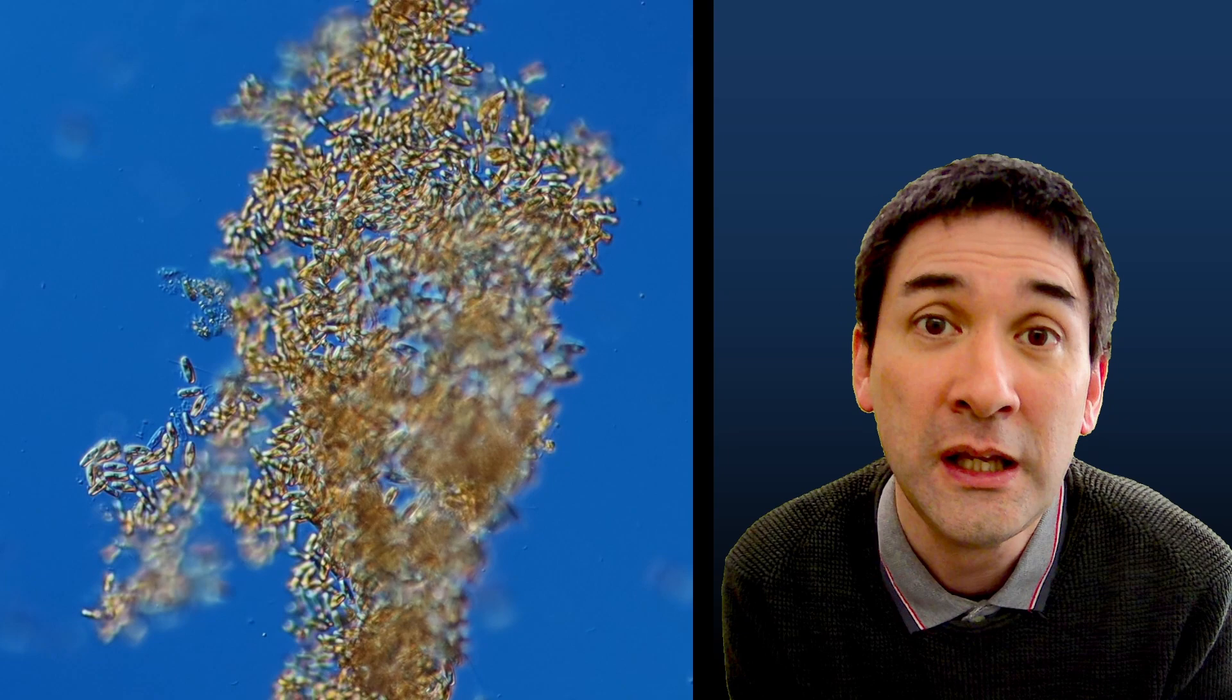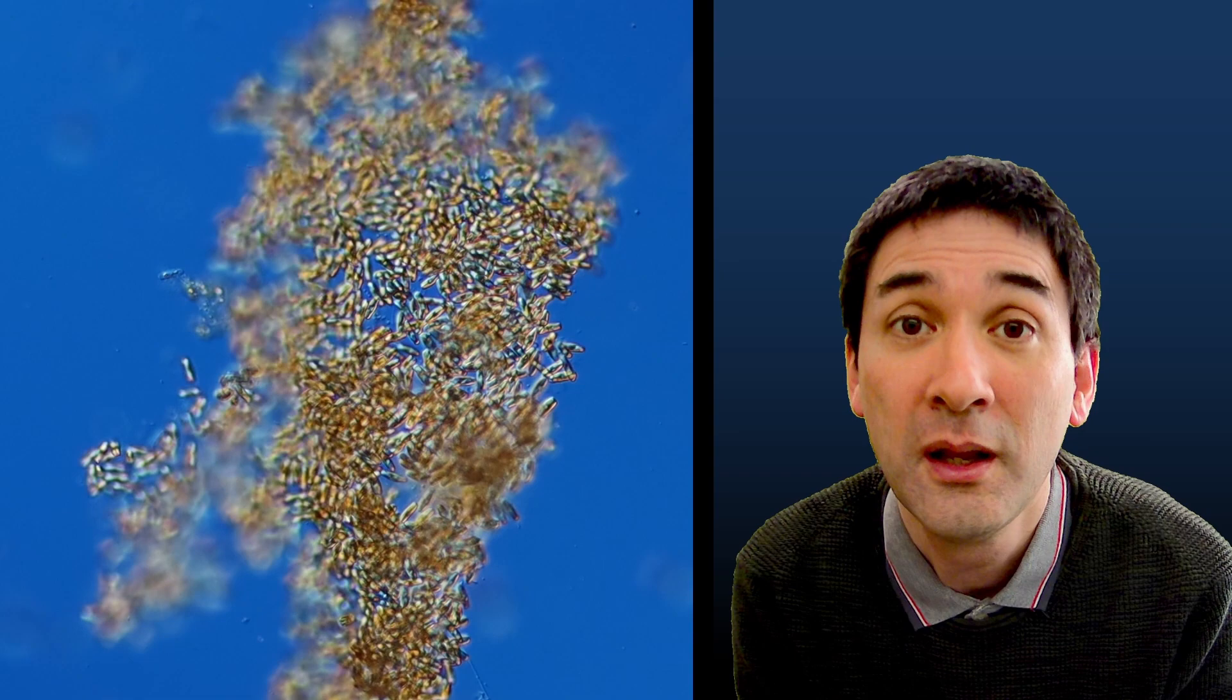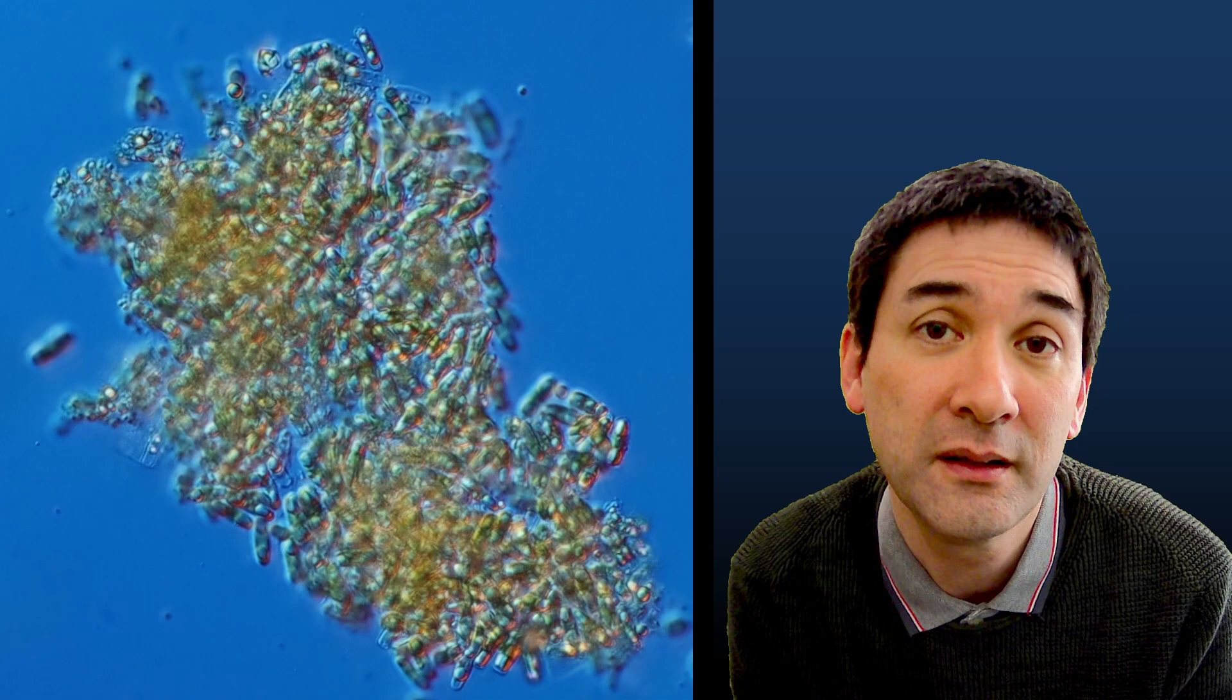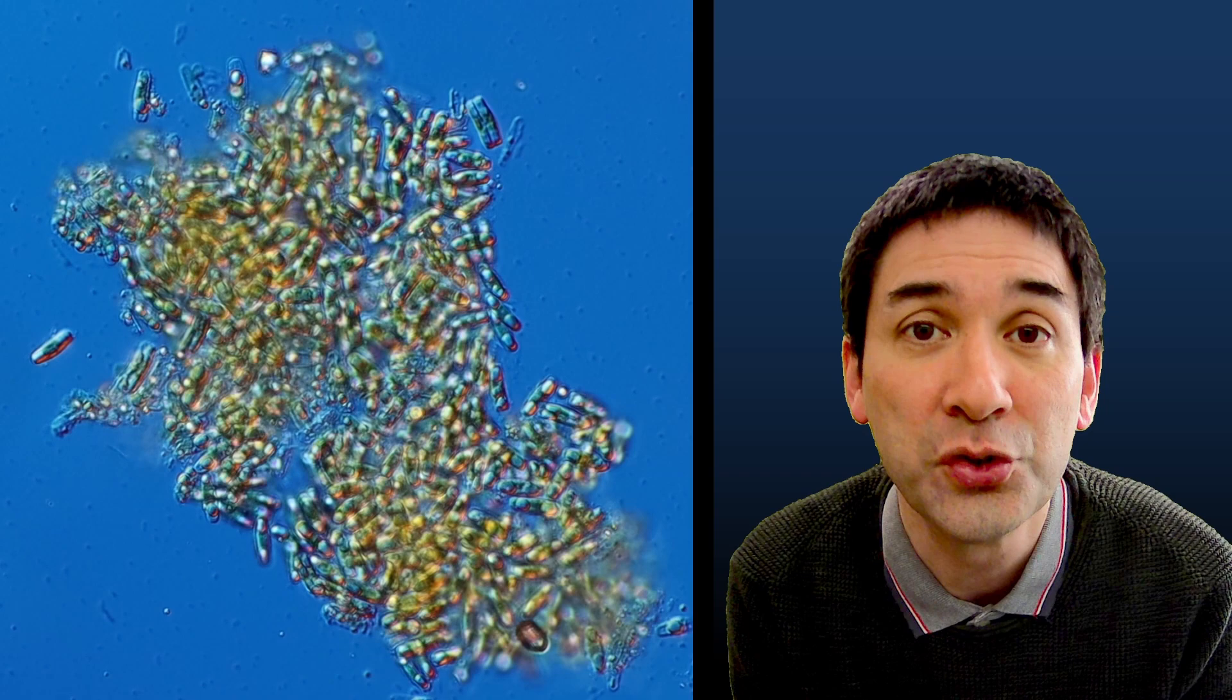And when I zoomed in a little bit more, I could see the individual cells. And these are most likely diatoms. Diatoms are single-celled algae. And they are quite unique because they have a shell made of silica. And at a higher magnification, we can even see the regular structure of those diatoms and also the chloroplasts, the green structures inside the individual cells.